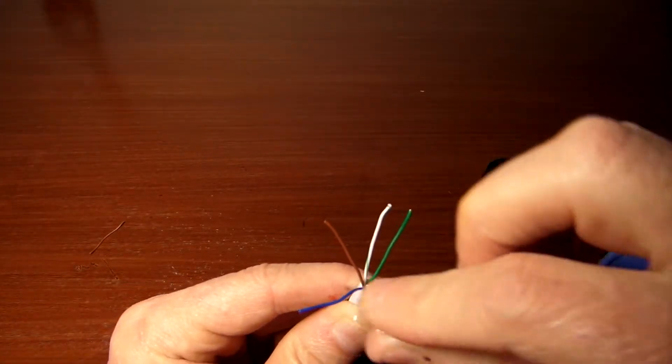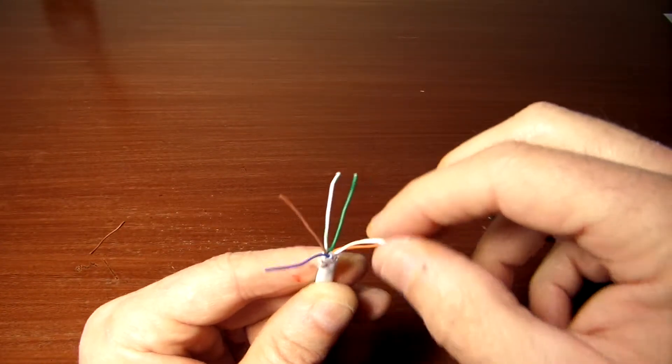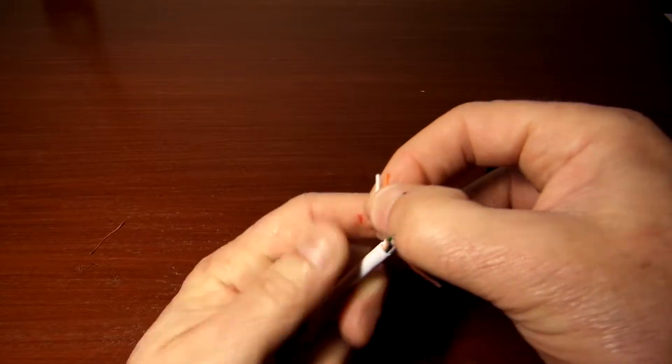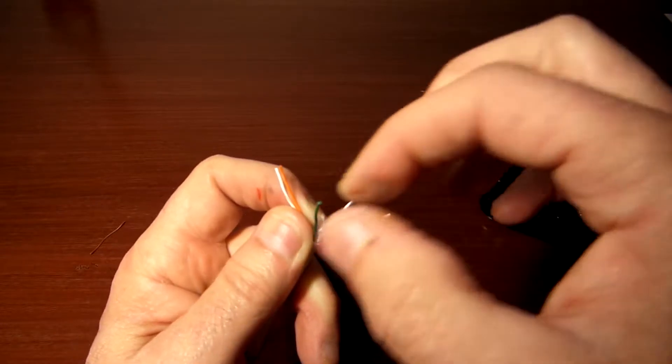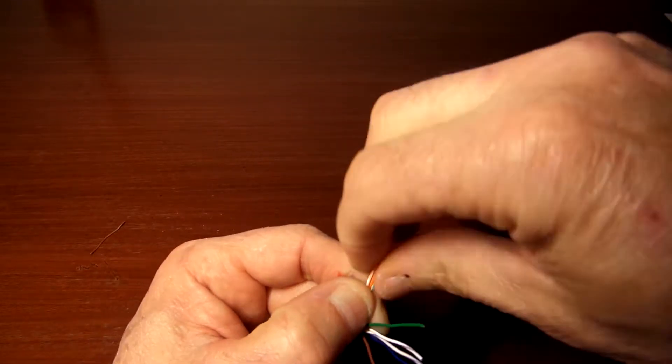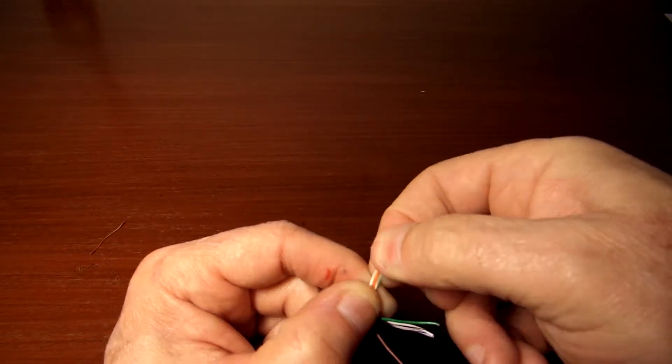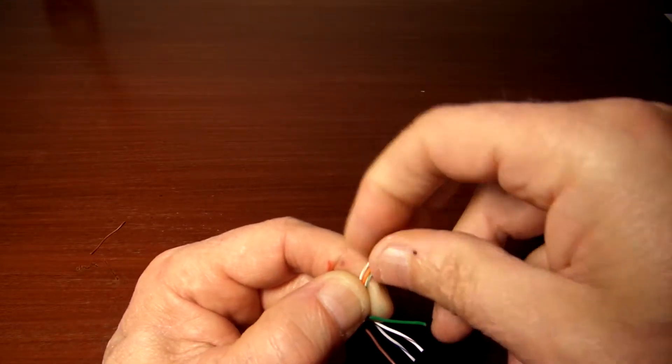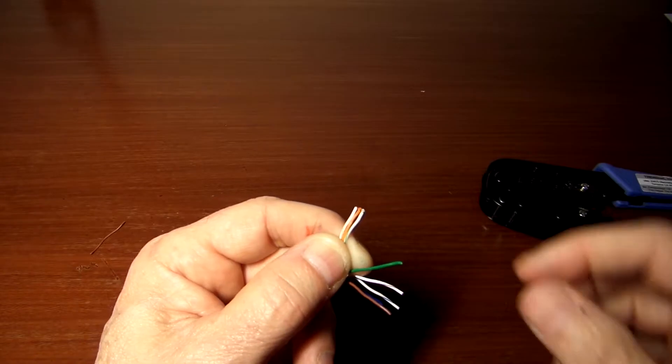We have these straightened out, so we're going to start sequencing them. The way you want to do these is first start off with the orange and white, and then next to that is going to be your orange. Next to that one is the green and white. You want to kind of position these so that they're not crossing over too much. An easy way to do that is to kind of bend these over your finger and work them a little bit like that to get them laying flat as possible.